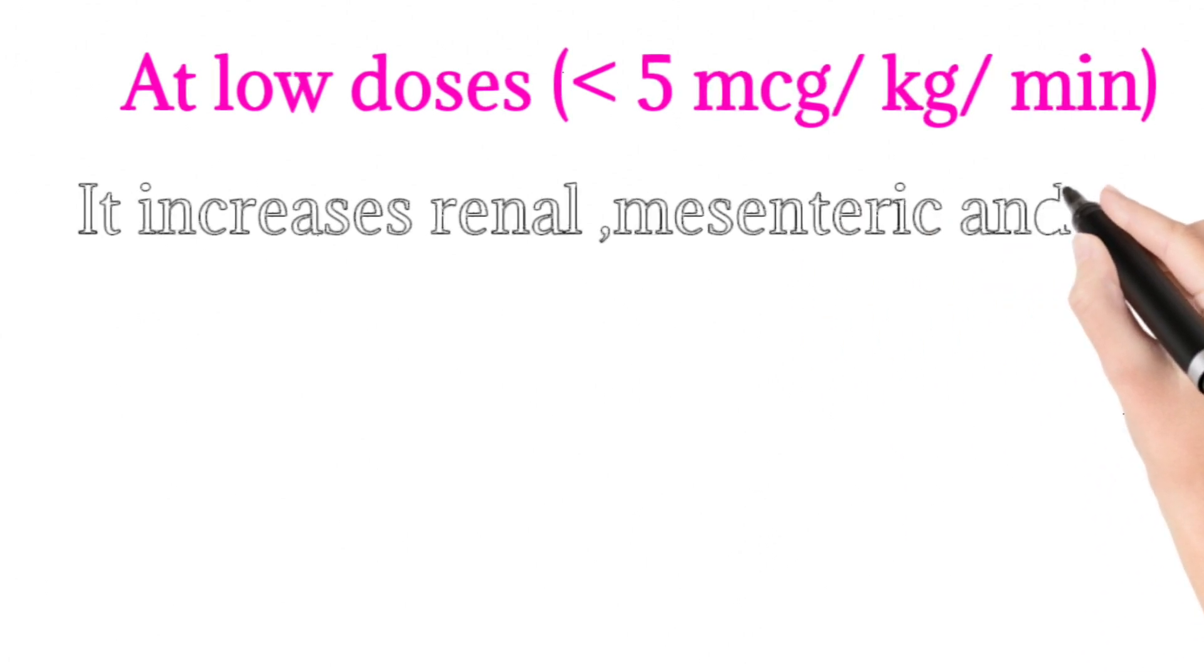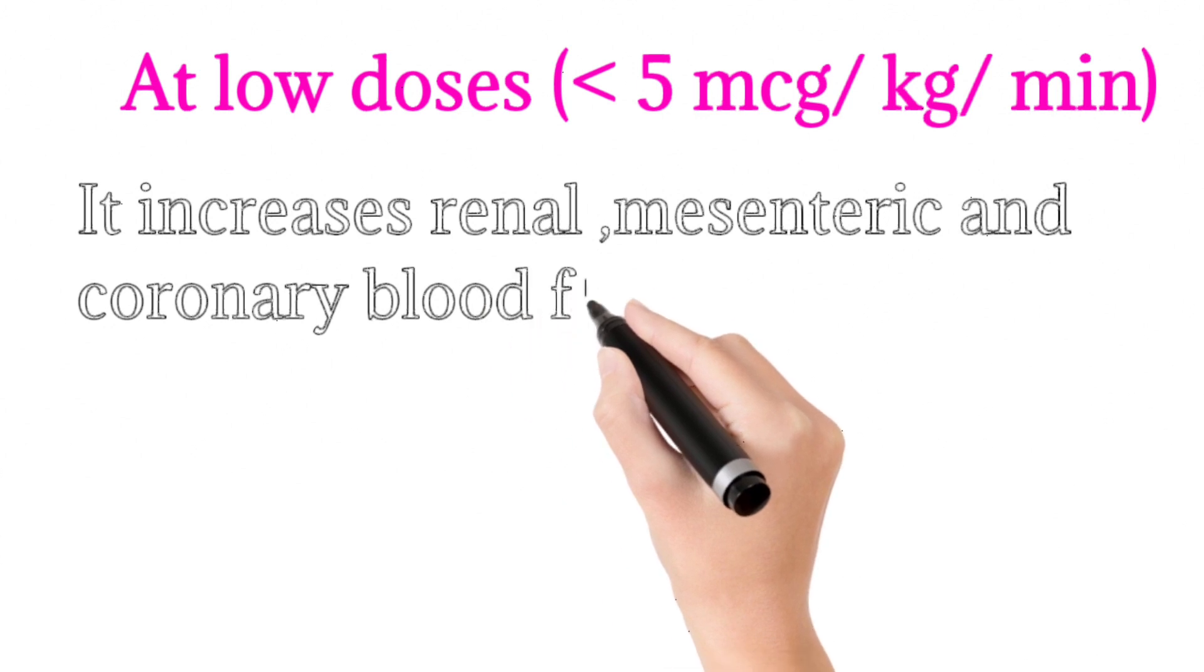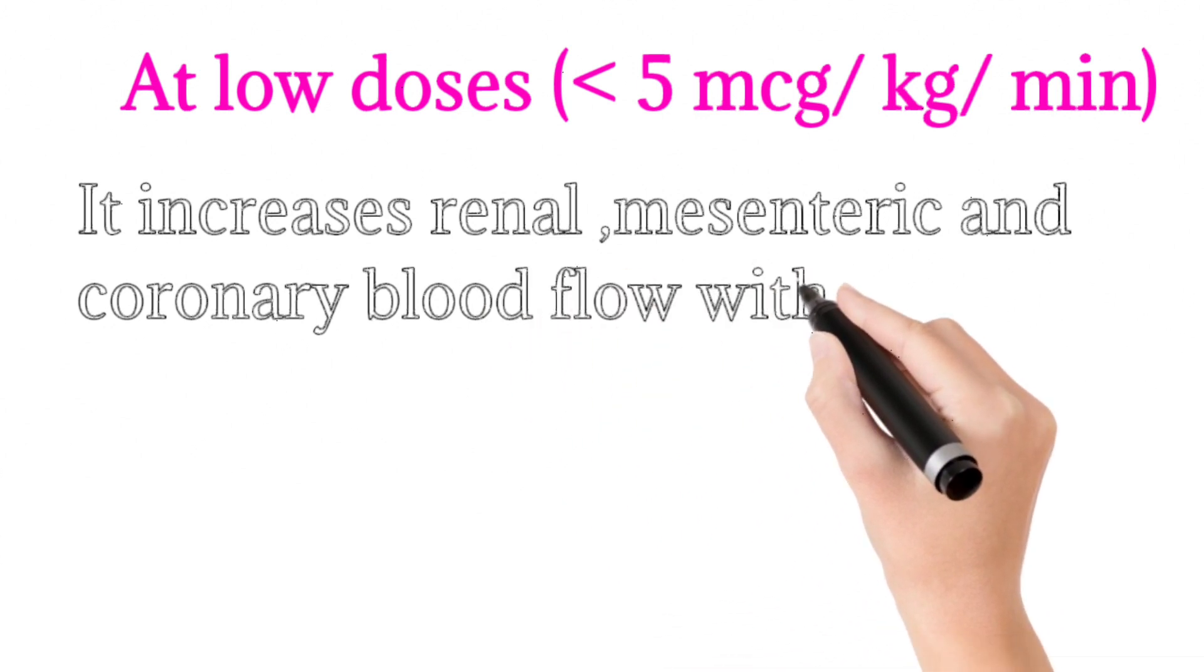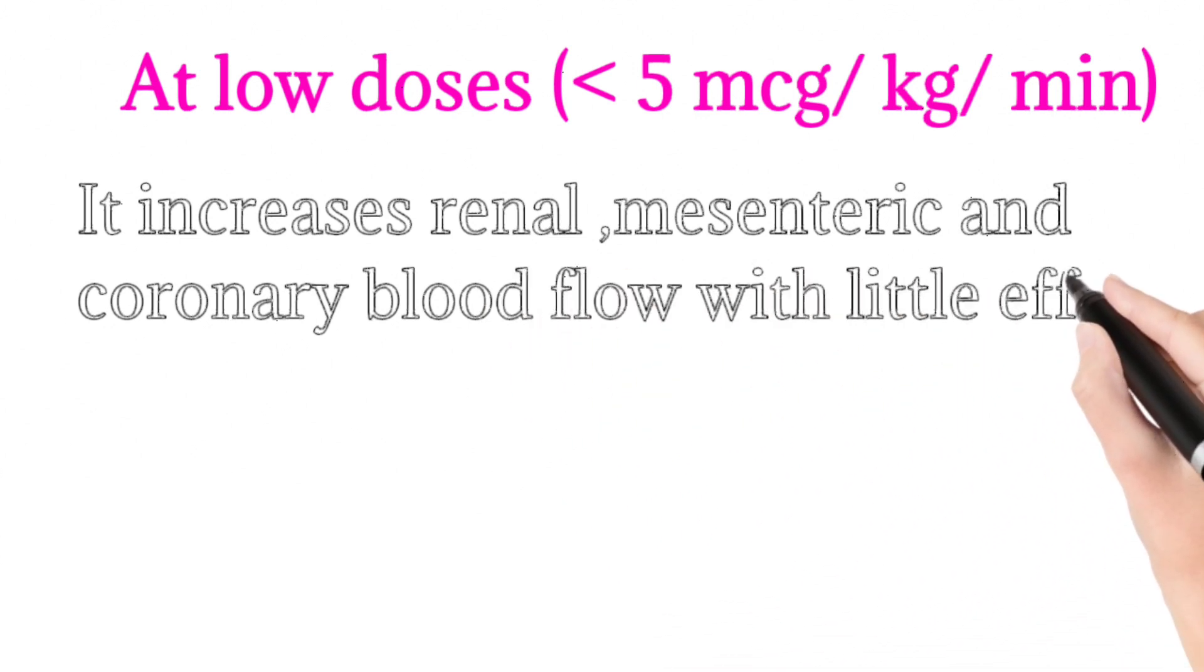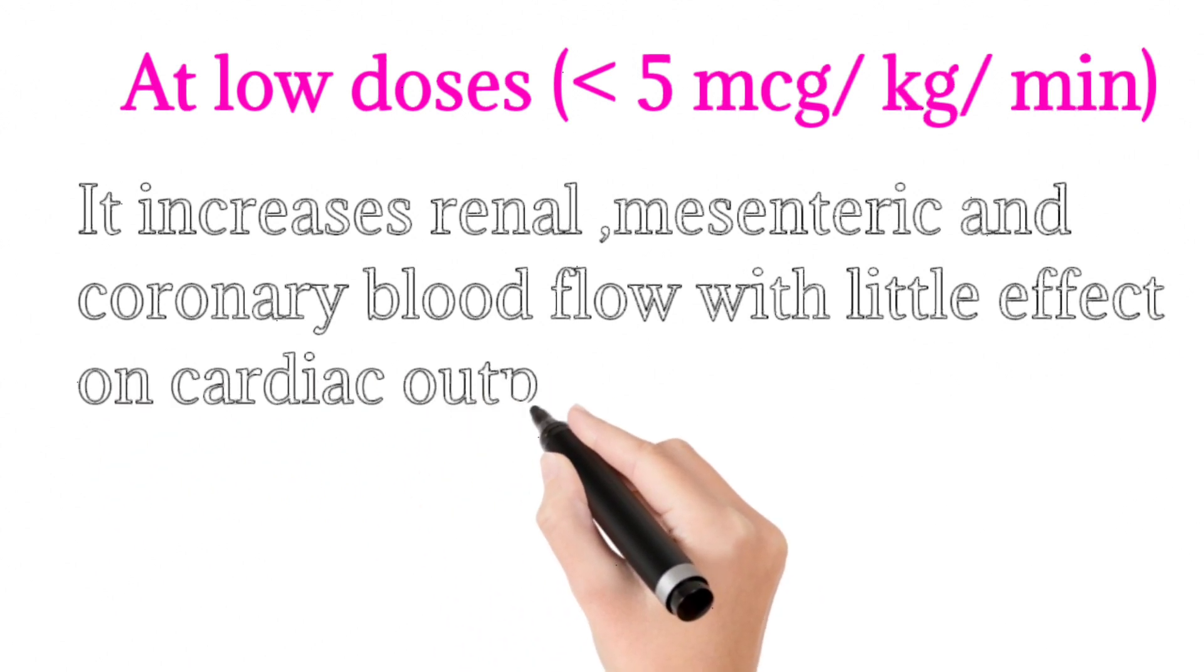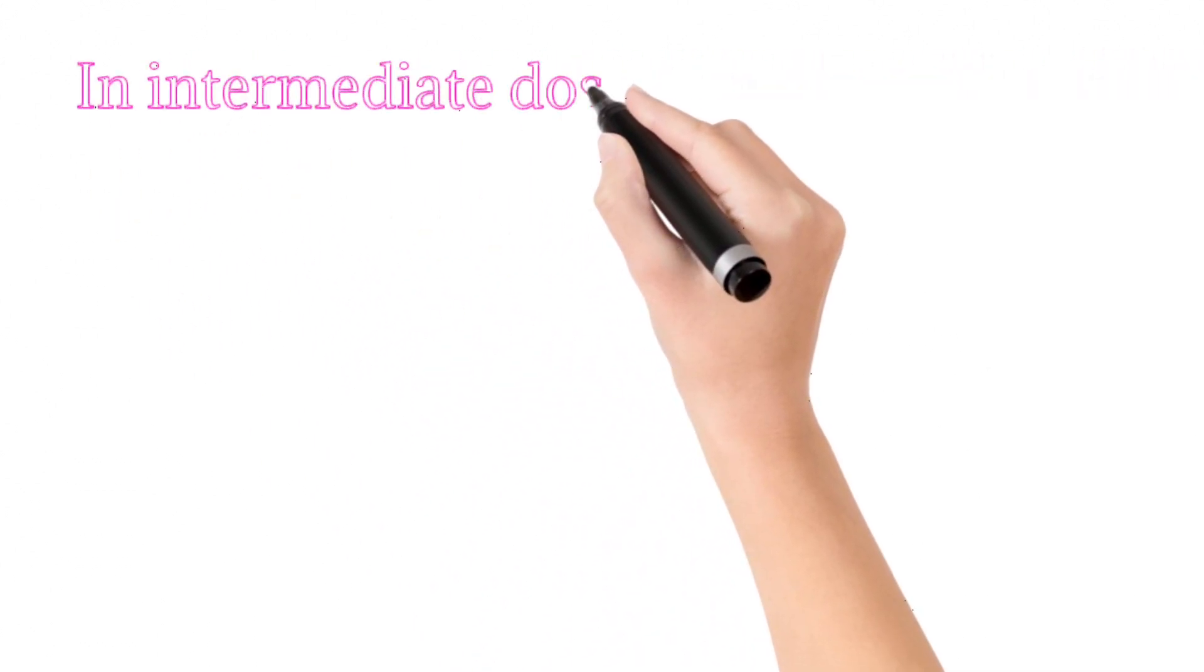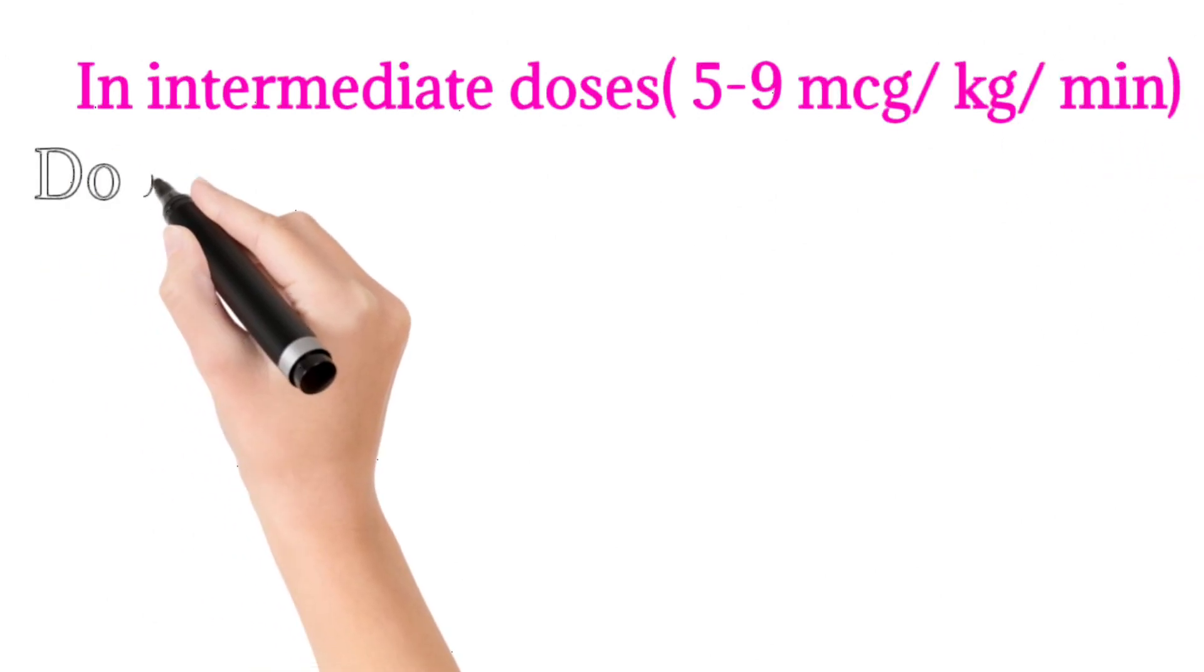If we suspect renal ischemia or mesenteric ischemia, we can start dopamine at low doses. It has little effect on cardiac output. At intermediate doses, 5 to 9 micrograms per kilogram per minute, dopamine has positive inotropic and chronotropic effects. It is somewhat cardio selective at this dose.